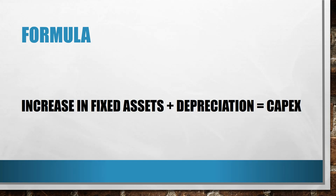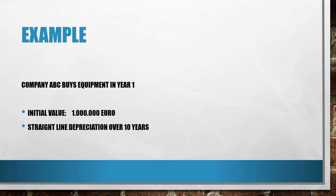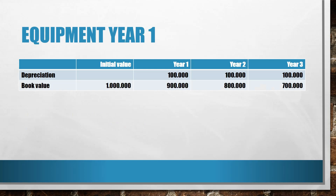I would like to show you a very simple example to illustrate how this formula works. Company ABC buys equipment in year one. The initial value of the equipment is 1 million euro and they decide to apply straight-line depreciation over 10 years. So this is how the depreciation table would look like: initial value is 1 million euro, and in year one the company would depreciate 100,000 euro — one tenth of 1 million.